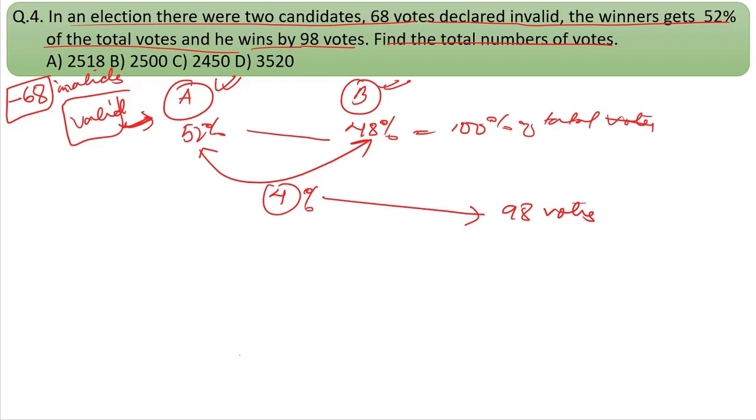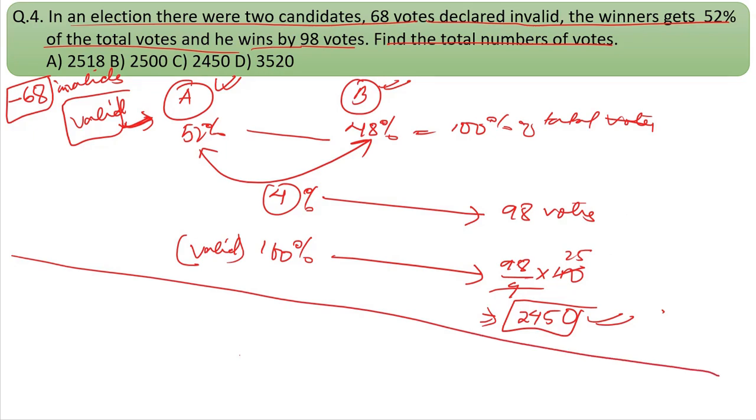If 4% equals 98 votes, then 100% equals 98 divided by 4 times 100. That's 98 times 25, which equals 2450. These are the valid votes. Adding the 68 invalid votes: 2450 + 68 = 2518. The answer is option A.